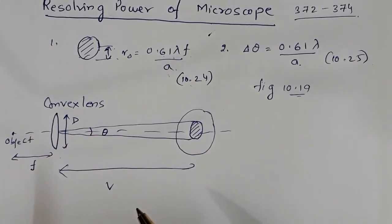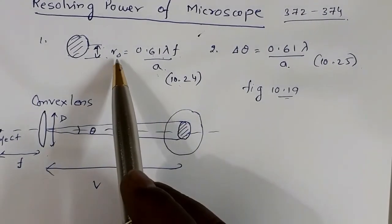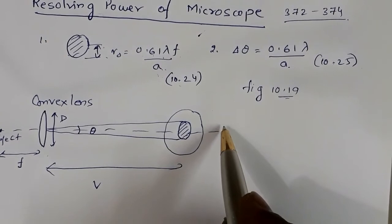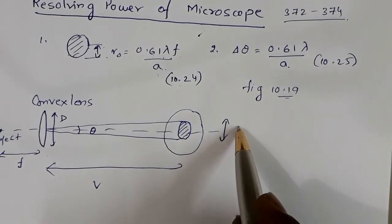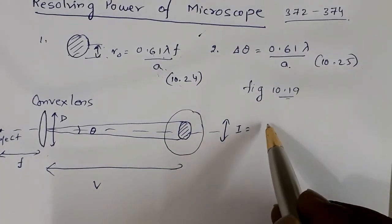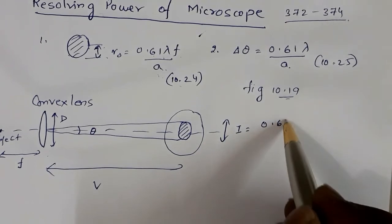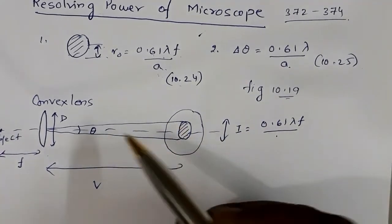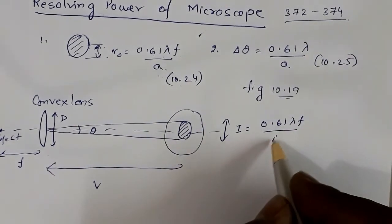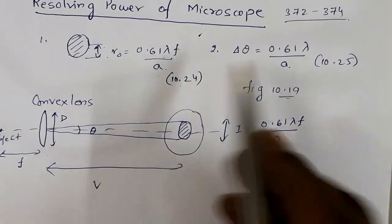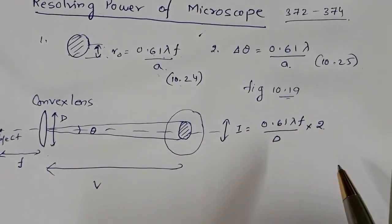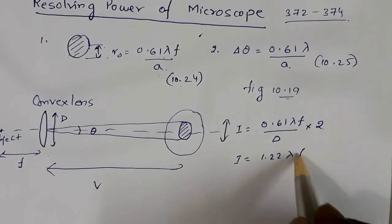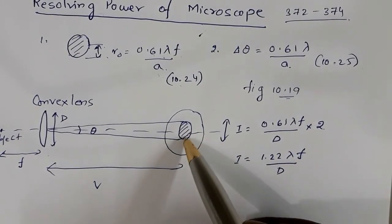As we have seen, the radius of the central bright maxima is 0.61λf/a. In this case the aperture size is D, and since the radius gives us a half-size, we multiply by 2. So the image size I = 1.22λf/D — this is the diameter of the central maxima.